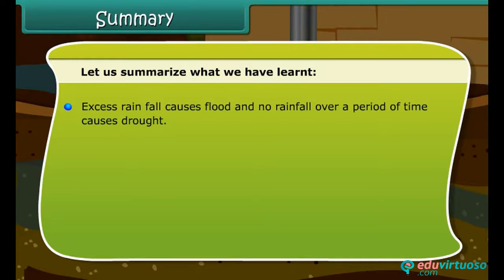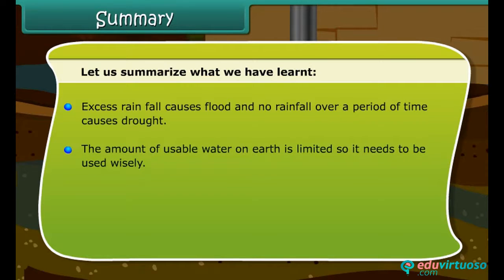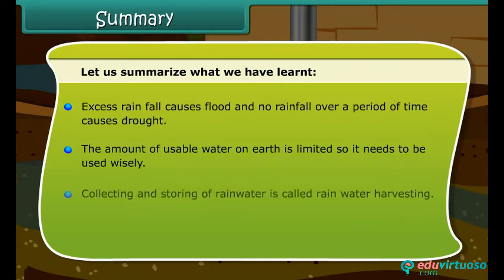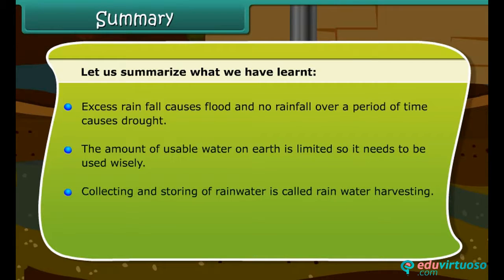Let us summarize what we have learned. Excess rainfall causes floods, and no rainfall over a period of time causes drought. The amount of usable water on Earth is limited, so it needs to be used wisely. Collecting and storing of rainwater is called rainwater harvesting.